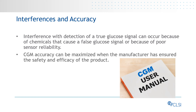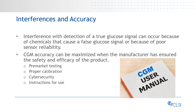CGM accuracy can be maximized when the manufacturer has ensured the safety and efficacy of the product through appropriate pre-market testing, proper calibration of the devices, effective cybersecurity controls, clear instructions for use in the product labeling, and the system is operated properly by the users according to these directions.